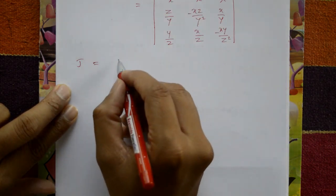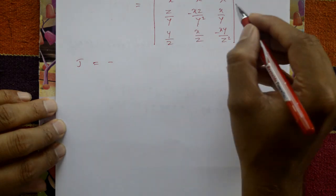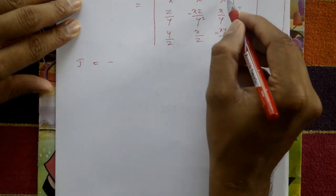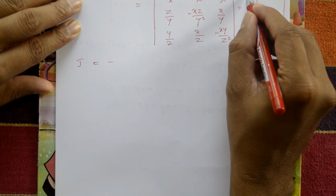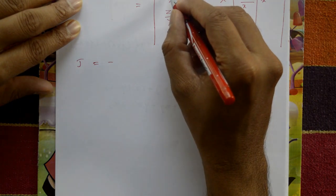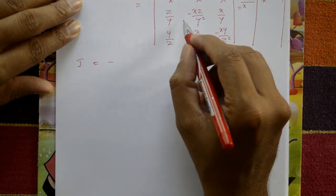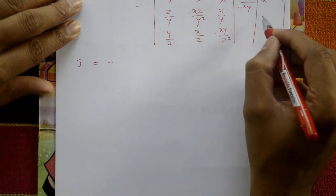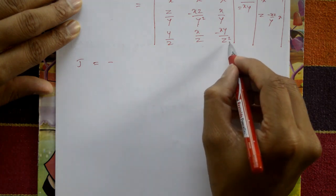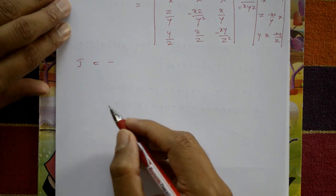Now expand this determinant. Take 1/x common from the first row — first row becomes [−yz/x, z, y]. Take 1/y common from the second row — second row becomes [z, −xz/y, x]. In the third row take 1/z common — third row becomes [y, x, −xy/z]. Now expand this one.